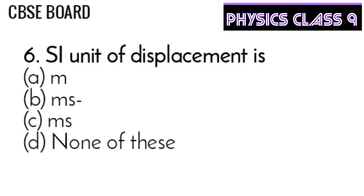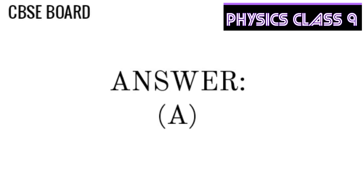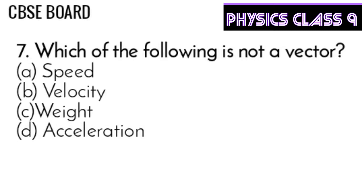Question 6: The SI unit of displacement is meter, meter per second, meter second, or none of these. Just like distance, it is meter. Question 7: Which of the following is not a vector — speed, velocity, weight, or acceleration? The answer is A — speed is not a vector.